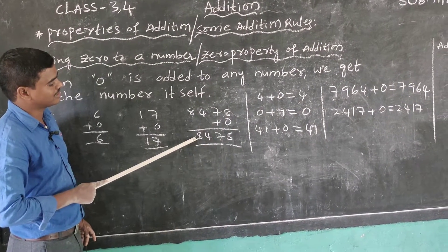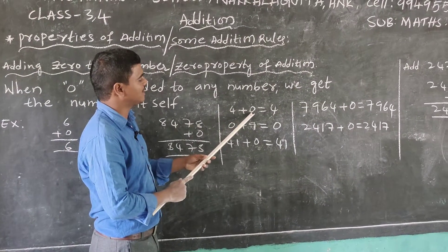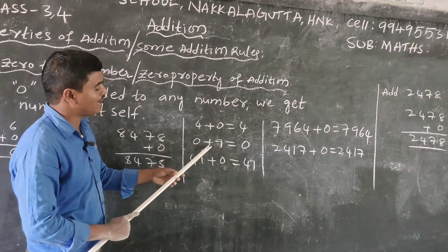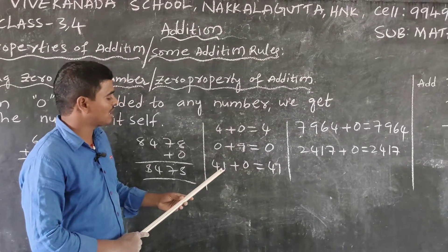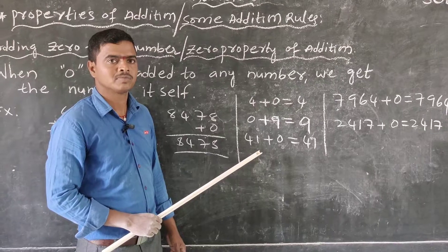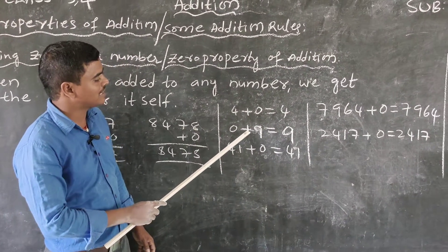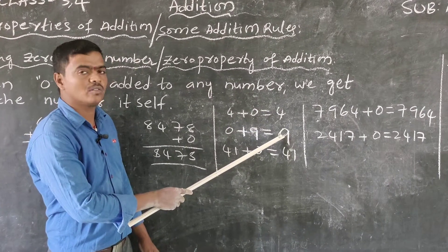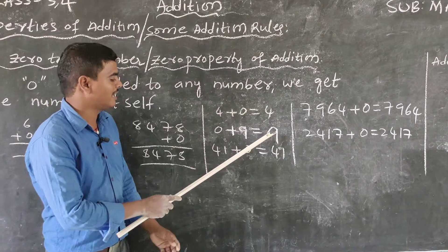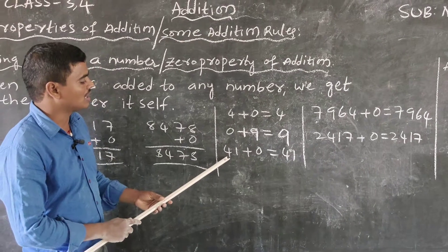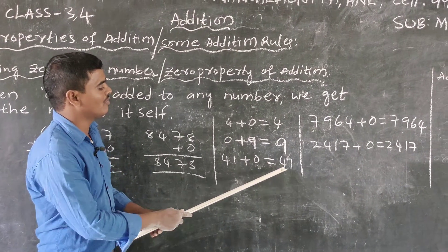Next: 0 plus 9 is equal to 9. Then 41 plus 0 is equal to 41.